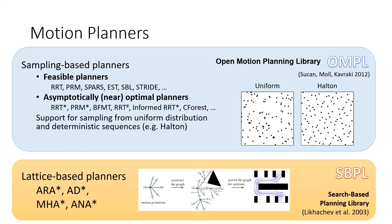Besides sampling-based planners, we additionally include lattice-based planners from the search-based planning library. These include algorithms such as ARA star or MHA star that find a path by constructing a graph where motion primitives connect the vertices.